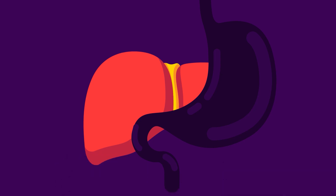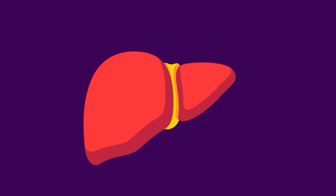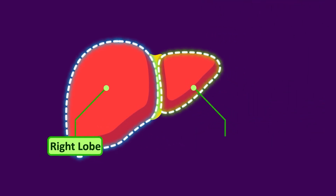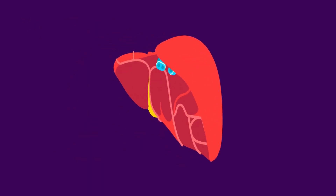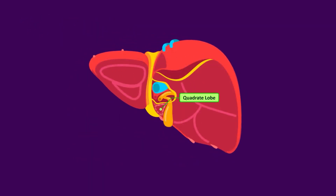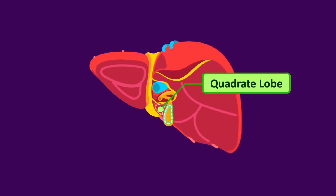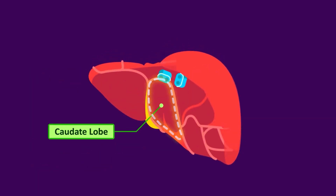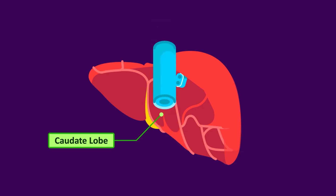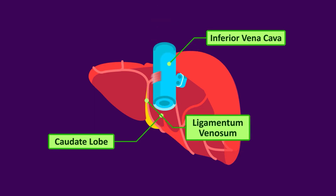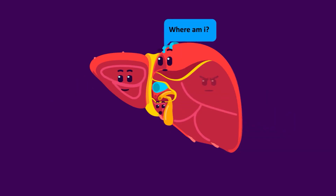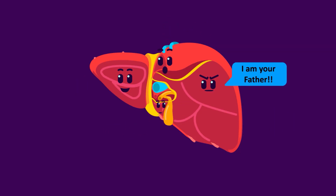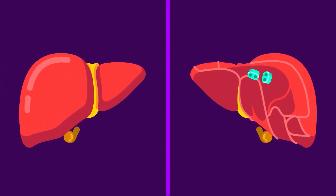The human liver can be grossly divided into two lobes — a right and a left — by the falciform ligament. There are two additional lobes that can only be seen from behind: the quadrate lobe, situated between the gallbladder and the round ligament, and the caudate lobe, found facing cordially between the inferior vena cava, the ligamentum venosum, and the porta hepatis. Many anatomists classify these two lobes as subparts of the right lobe of the liver.